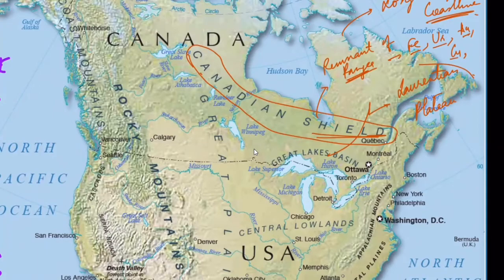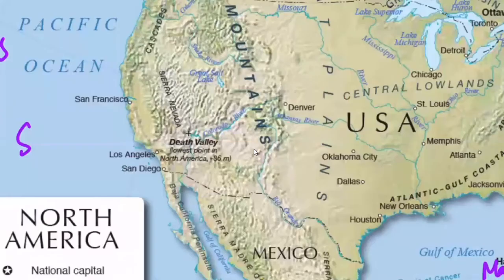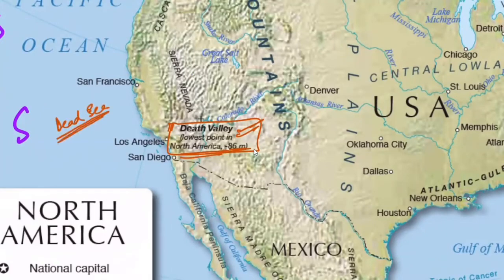This region is known as the Florida Peninsula. Below Sierra Nevada there is a place known as Death Valley, which is the lowest place in North America. Similarly, the lowest place in the world is the Dead Sea, which lies on the boundary of Jordan and Israel.